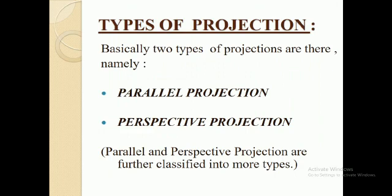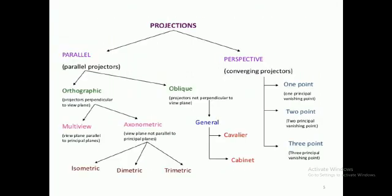Basically there are two types of projections: parallel projection and perspective projection. This is a flowchart to show the types of projection in computer graphics. Projection is divided into parallel and perspective. Parallel projection has parallel projectors while perspective projection has converging projectors.